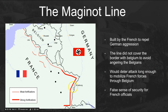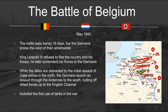The Maginot Line had very strong fortifications along the southern end, but very weak coverage along the Belgian border. In the Belgium campaign, the battle lasts barely 18 days in May of 1940. King Leopold refuses to leave his country and troops, ignores advisors' warnings, and surrenders his forces to the Germans. He's referred to as the Coward King, despised by the Allies for leaving their flanks open. While the Allies are distracted by the initial assault — referred to as Case Yellow in the north — the Germans launch another assault through the Ardennes to the south, cutting off Allied forces up to the English Channel, effectively losing Belgium. It also included the first tank conflicts of the war.